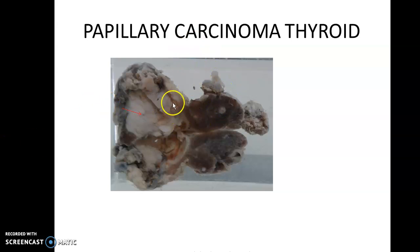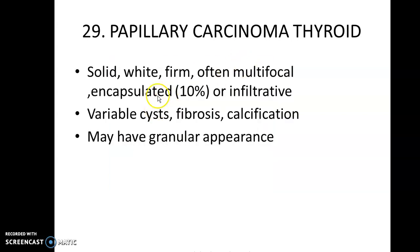A specimen of thyroid with a classical appearance for papillary carcinoma of thyroid should be a cystic lesion with granular excrescences. With papillary excrescences on gross, we always describe a granular appearance. The appearance can be solid, firm, multifocal, and infiltrative. It can have variable cysts, fibrosis, and calcification with a granular appearance.